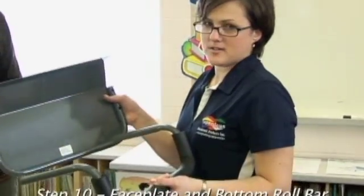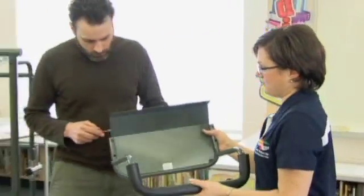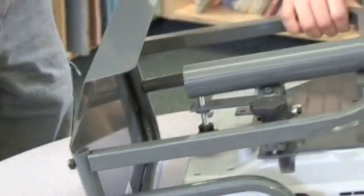Now we're going to fasten the face plate to the bottom roll bar. Attach the bottom roll bar to face plate first and then attach to projector mount bracket.